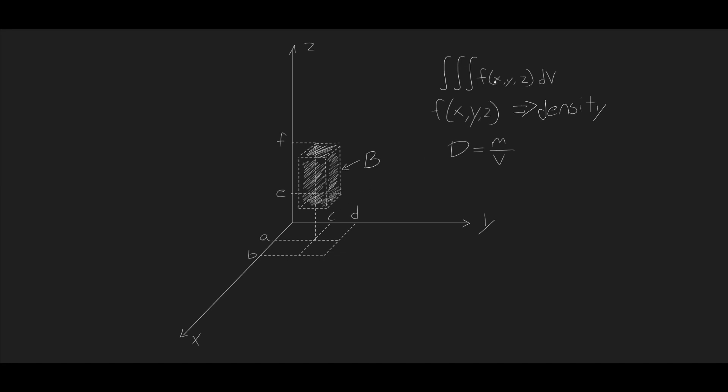If f of x, y, z represents the density at every point in space, then the triple integral can represent the mass of this object, because density is mass over volume. And in the triple integral, when we take the density, so f, and we multiply it by a small volume, that will give us a small mass.